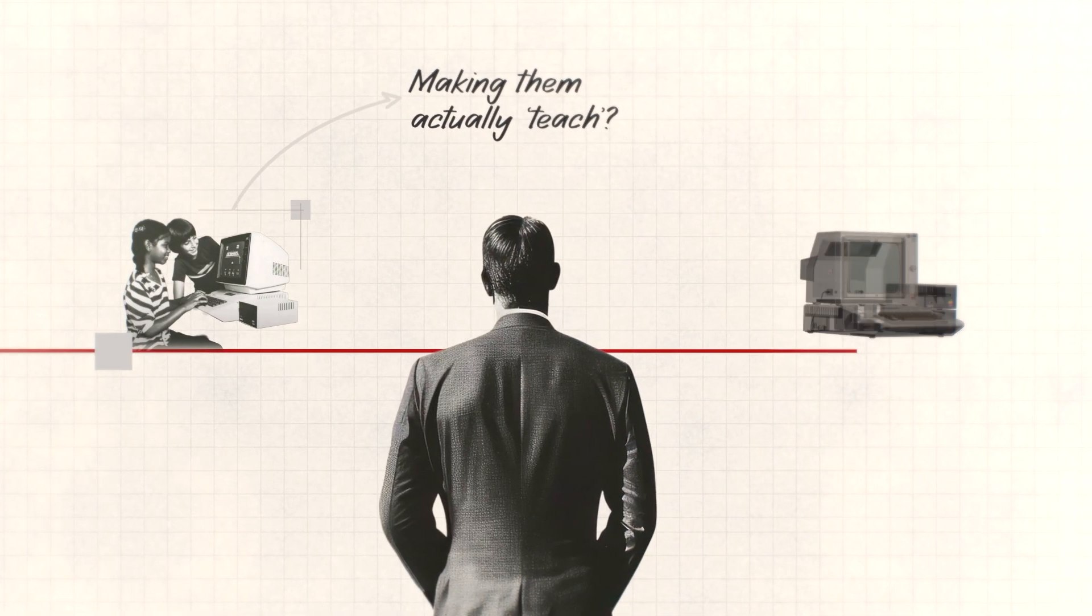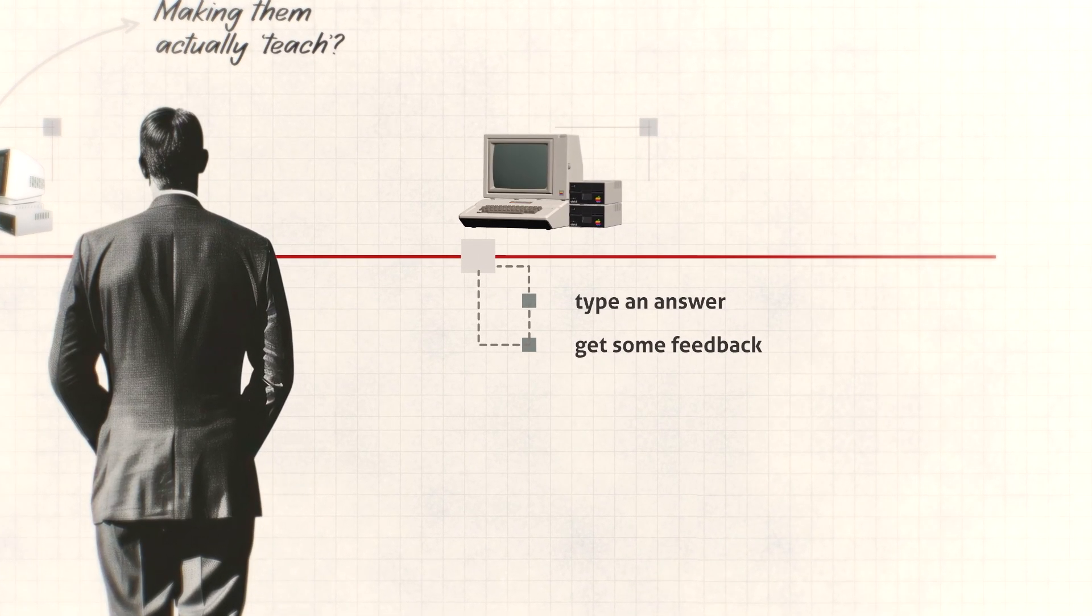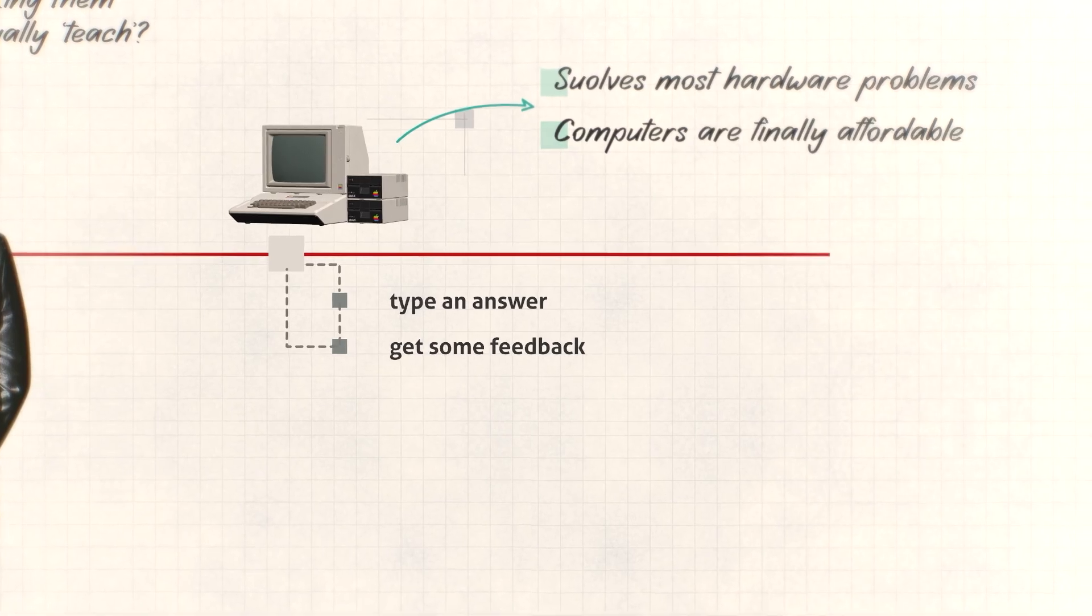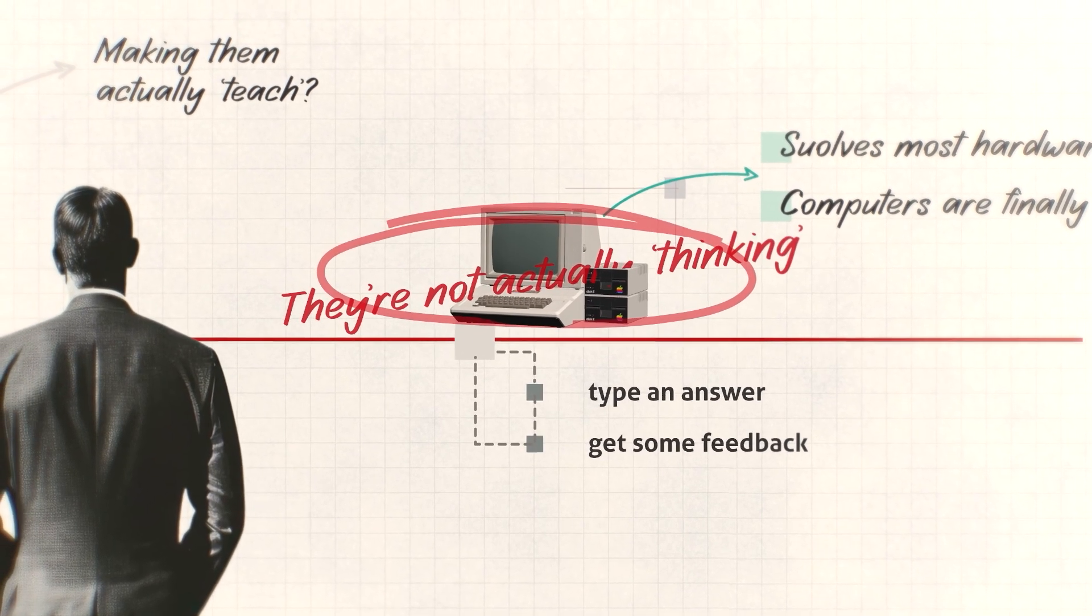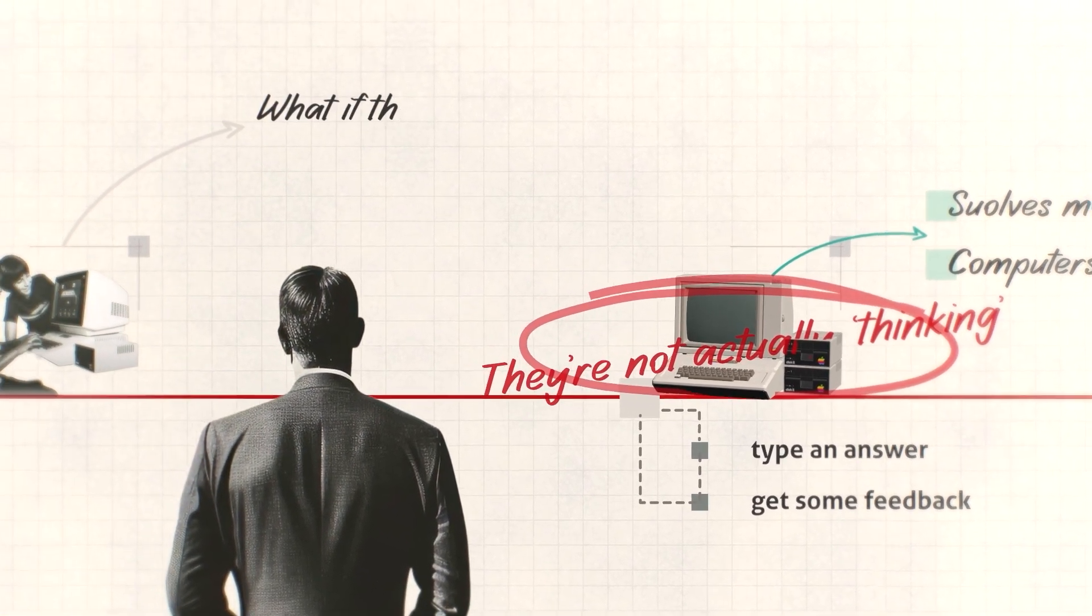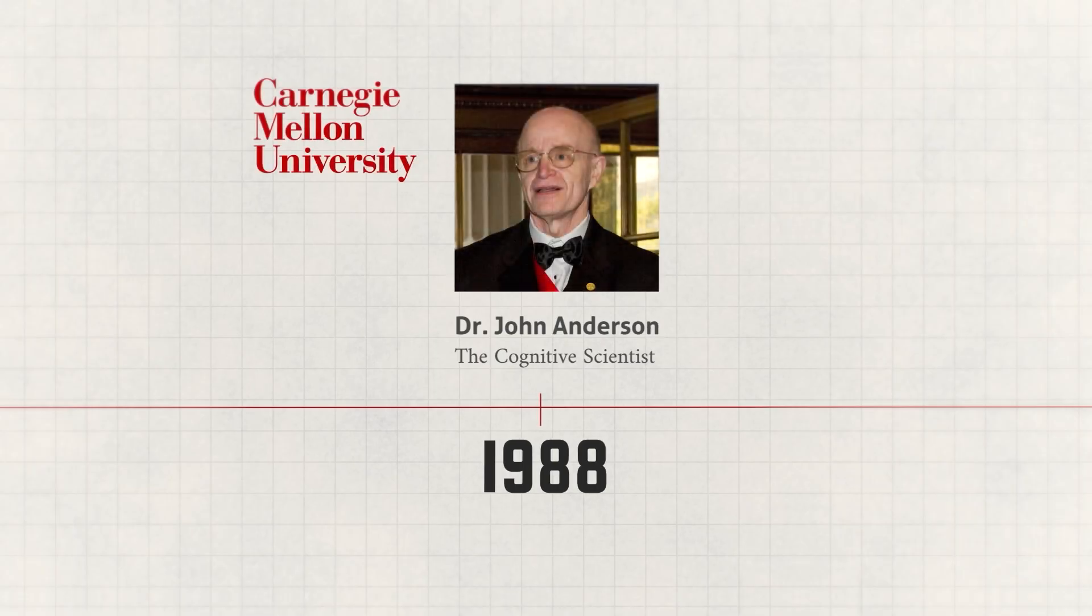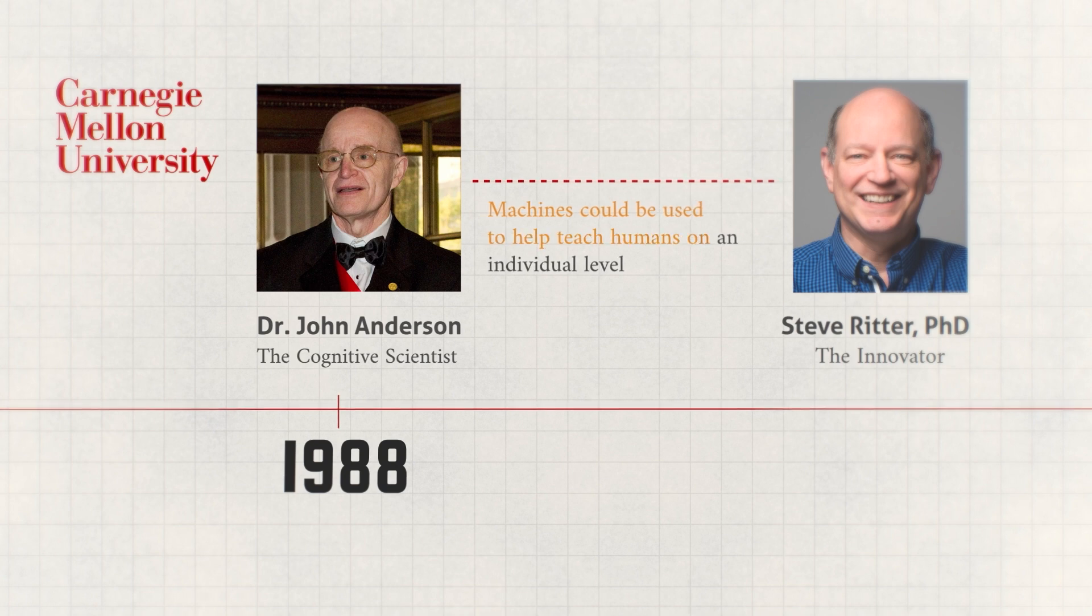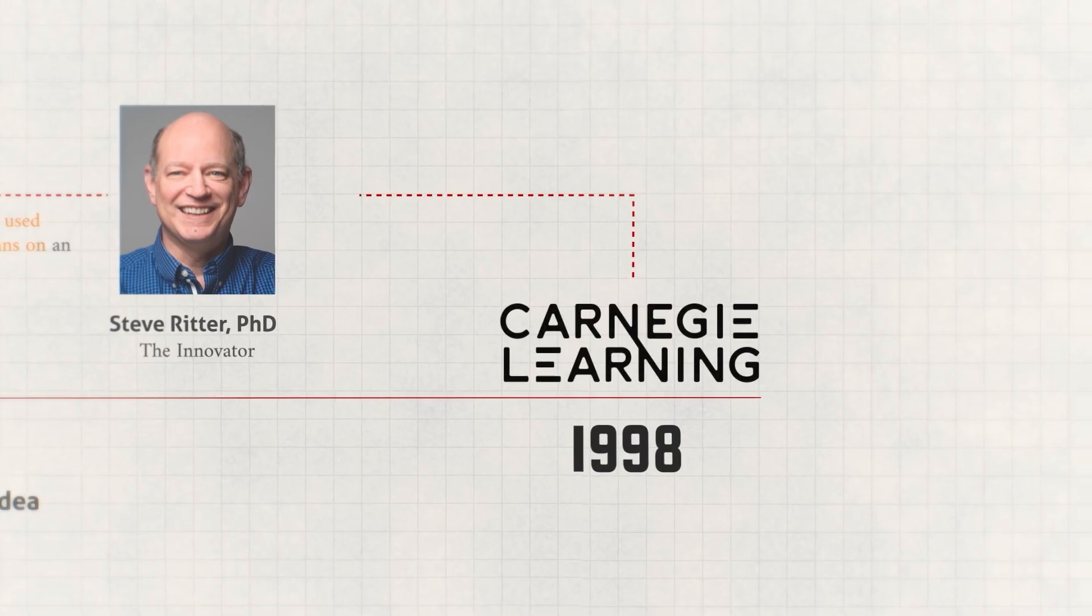So educators begin to realize that having computers in classrooms is one thing, but making them actually teach? Well, that's another. The Apple II can run educational software, but it's still basically a digital worksheet. Type an answer, get some feedback, and move on. But despite being incredibly limited, the Apple II did single-handedly solve the hardware problem. Because now, computers are finally affordable, and they're everywhere. But they're not actually adapting to how each student learns. So the question shifts. What if the computer could actually understand how you think? So in 1988, Dr. John Anderson, a professor at Carnegie Mellon, challenges his friend Stephen Ritter to show that machines could be used to help teach humans on the individual level, to create personalized digital tutors.